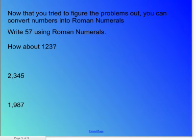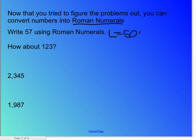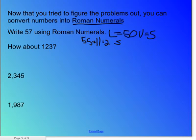Now that you've tried to figure the problems out, you can convert numbers into Roman numerals. Write 57 using Roman numerals. L equals 50, V equals 5, that's 55, plus I, I, which equals 2 — 55 plus 2 equals 57.